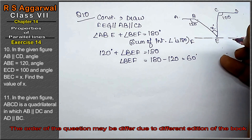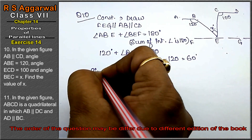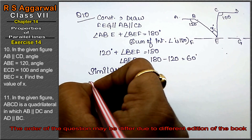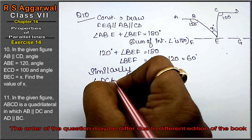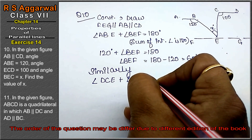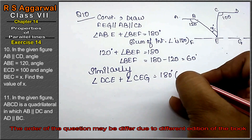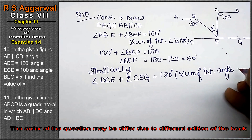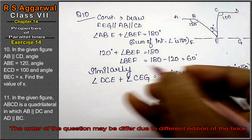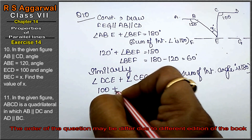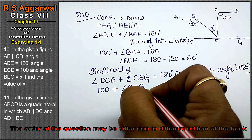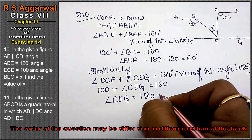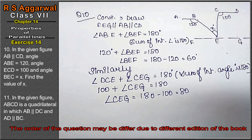Similarly, this side is also parallel, so angle DCE plus angle CEG equals to 180 degrees, because the sum of interior angles is 180 degrees. So angle DCE is 100, plus angle CEG equals to 180. So angle CEG equals to 180 minus 100, that is 80 degrees.